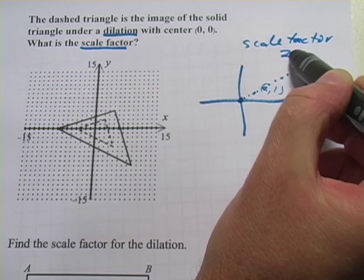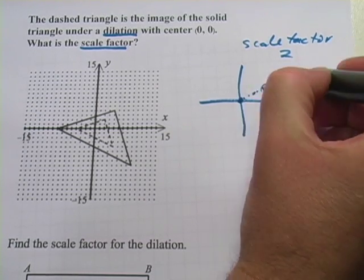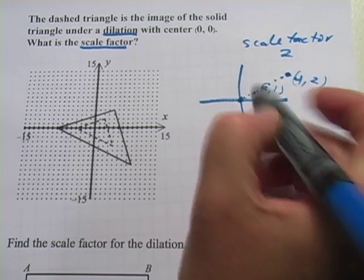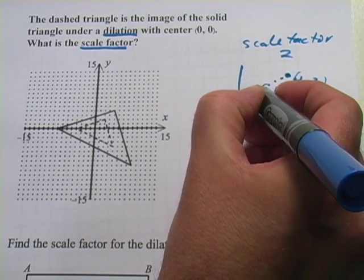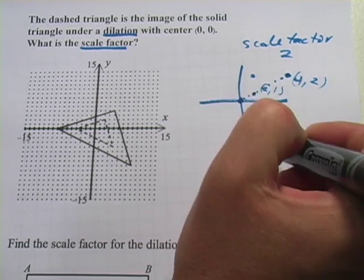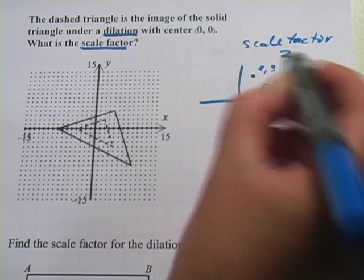So (2,1) becomes (4,2), that's 4 and 2 times 1 is 2, and you'll see it's on that same line. If I had not just a point but a line, let's say it was a line with points (2,1) and (3,0).